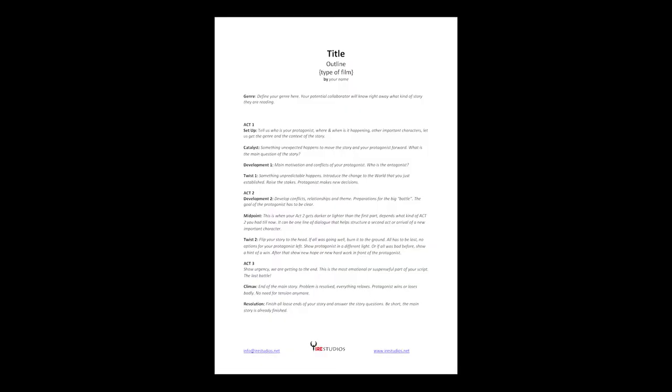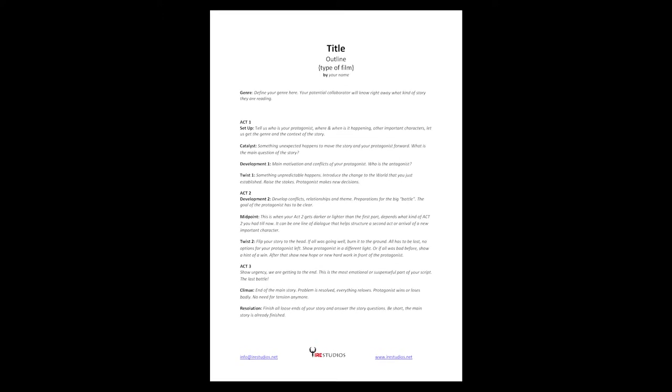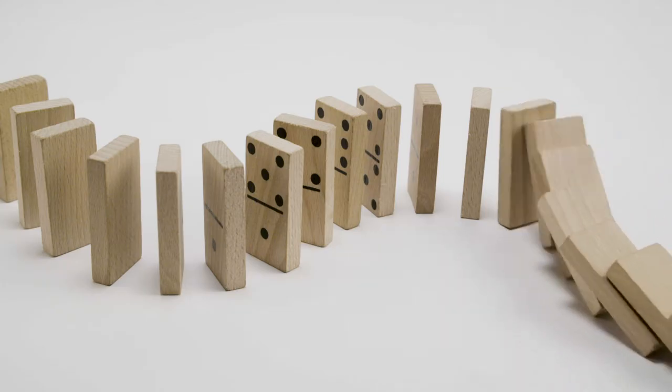Outline is an important step before writing your treatment and later your script. You will be able to polish your idea and structure at this point when it's still easy to fix any inconsistencies, because fixing stuff later can lead to a domino effect and collapse your script. Maybe there is something in your story that needs work in Act 2, or the climax doesn't work properly, or there is no logic in how a character reacts to an event. We said before that the screenplay is a blueprint or a map for the film. An outline is a blueprint of a script.